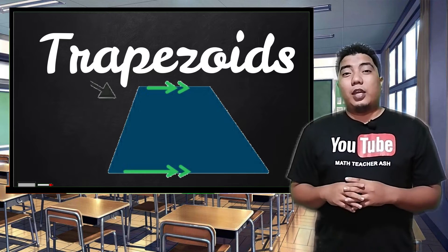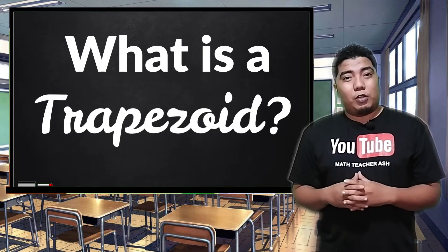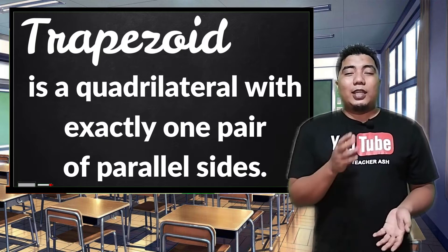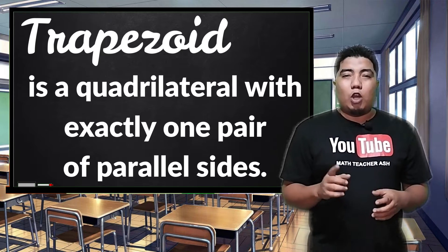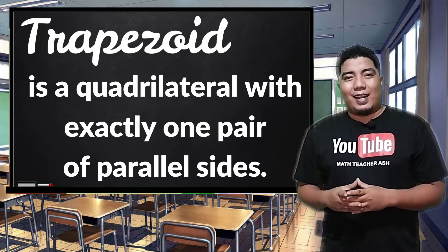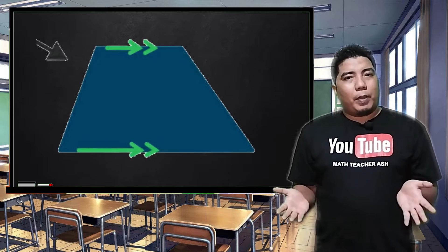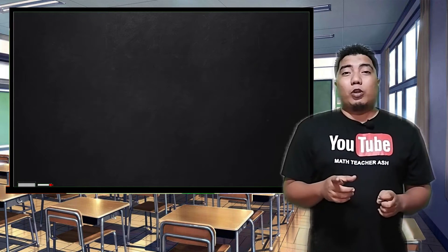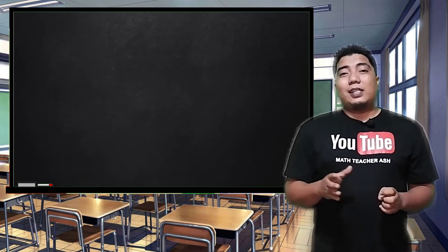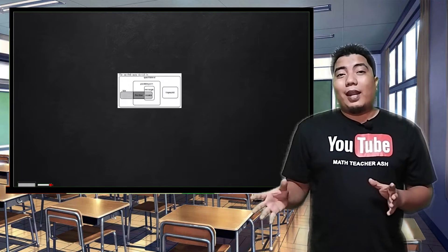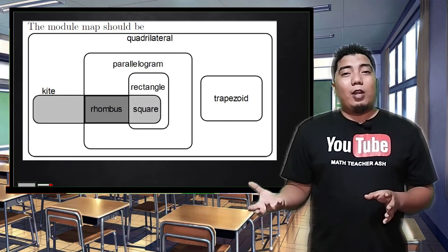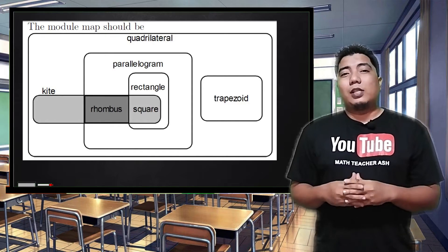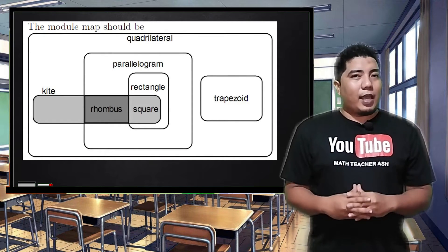The first question is: what is a trapezoid? A trapezoid is basically a quadrilateral in which it has exactly one pair of parallel sides, meaning the other pair of sides are not parallel. In trapezoids, this is not connected to parallelograms because parallelograms, as discussed in our previous videos, has two pairs of parallel sides.